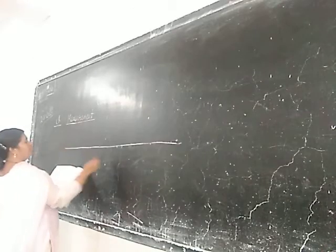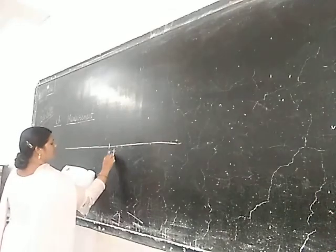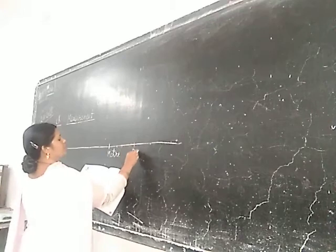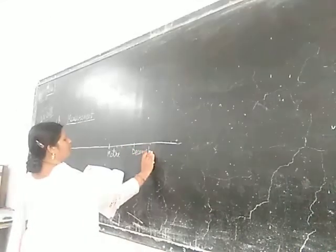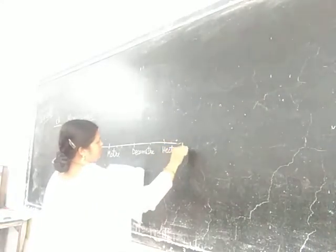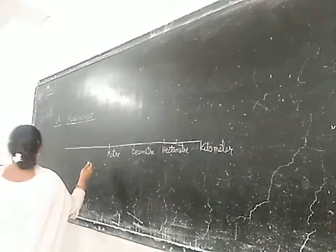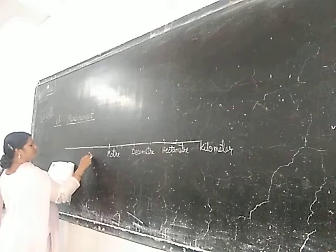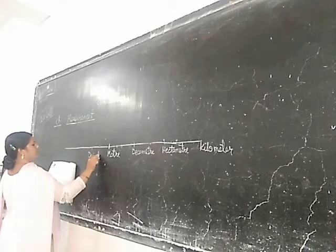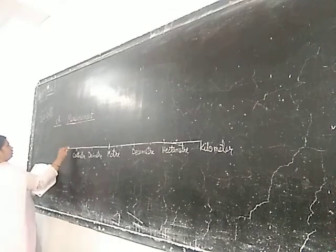Now, I will tell you how we convert the unit from unit to unit. This is the table. It is M, meter. Centimeter. Decameter. Hectometer. Kilometer. Millimeter. Decimeter. Centimeter. Millimeter.